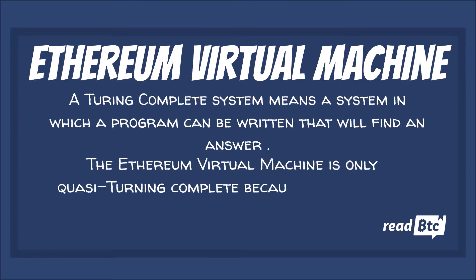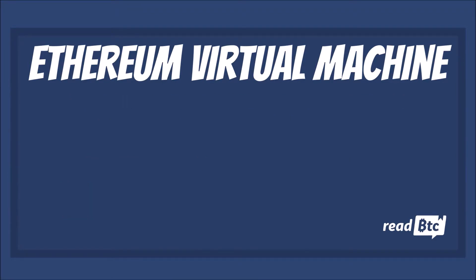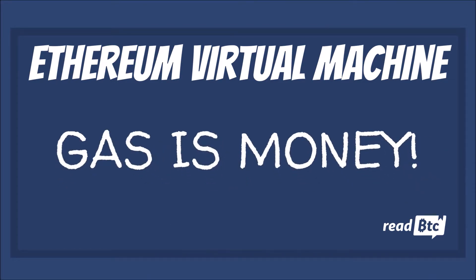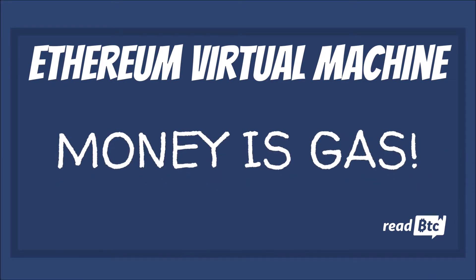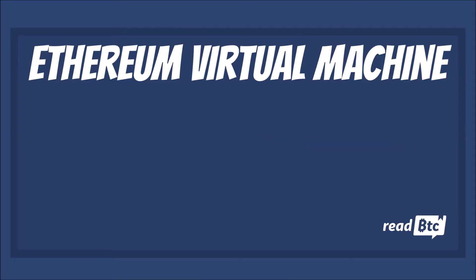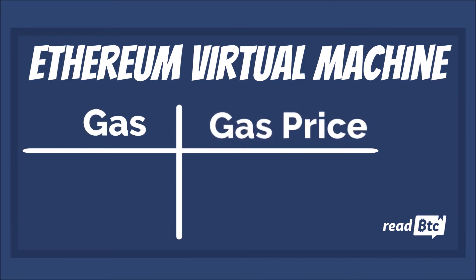The Ethereum Virtual Machine is only quasi-Turing complete because computations performed by the machine are bound by gas. With Ethereum, gas works as a fee — every transaction on the Ethereum network has a fee attached, which is paid in the form of gas. Ethereum's gas is divided into two components: gas and gas price.